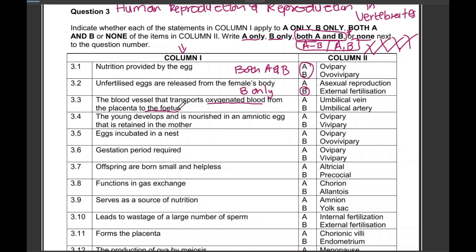'The blood vessel that transports oxygenated blood from the placenta to the fetus' — that would be the umbilical vein, so the answer is A only. Notice how I write 'only' after the letter — please do the same in your exam.